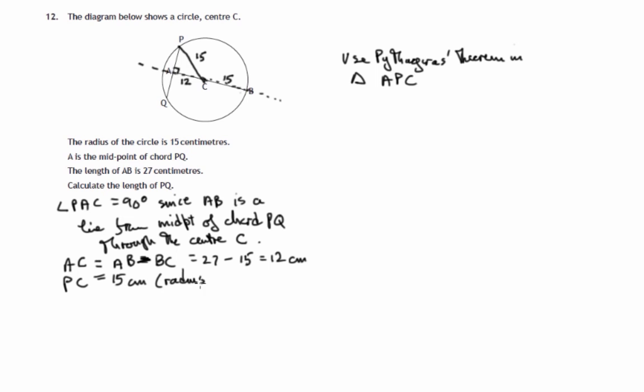So we've got these two lengths in the right angle. Let's draw this right angle triangle with A, C and P and just put all these lengths in. There's 15, there's 12.